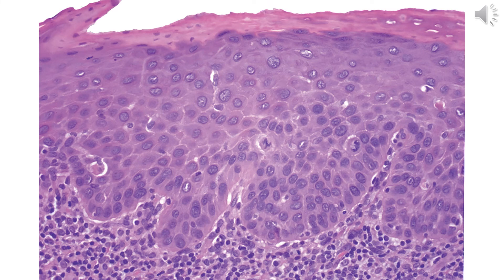An example of moderate dysplasia shows drop-shaped rete ridges extending into the basal layers, mild abnormal variation in nuclear size and stainability — that is hyperchromasia — increased nucleocytoplasmic ratio, and atypical mitotic figures in the basal and parabasal layers. Changes extend up to two thirds of the thickness, or up to the middle third of the epithelium.